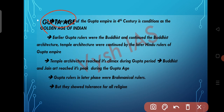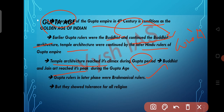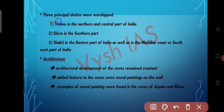We have completed the post-Mauryan period and now let's move to the Gupta age. The Gupta Empire in the 4th century is considered the golden age of India. Early Gupta rulers were Buddhist and continued Buddhist architecture, while later Gupta rulers continued temple architecture, which reached its climax during the Gupta period. Buddhist and Jain art also reached their peak. Later Gupta rulers were Brahmanical but showed tolerance for all religions. Three principal deities were worshipped — Vishnu in the northern and central parts, Shiva in the south, and Shakti in the eastern part and the Malabar coast.